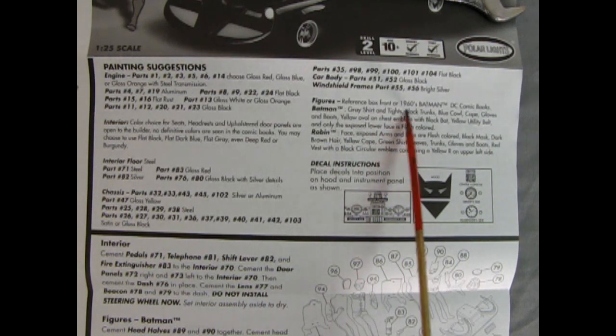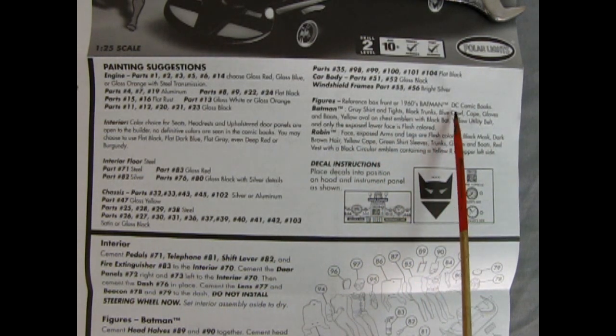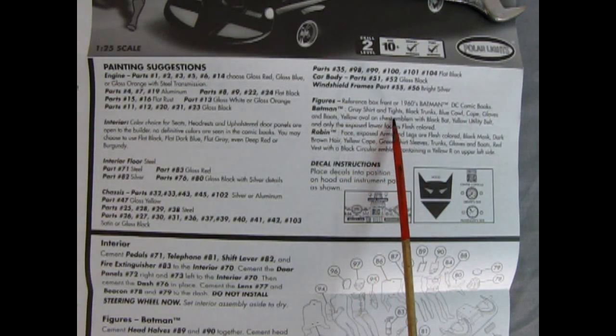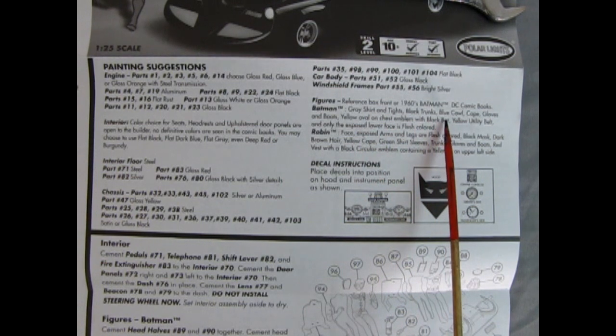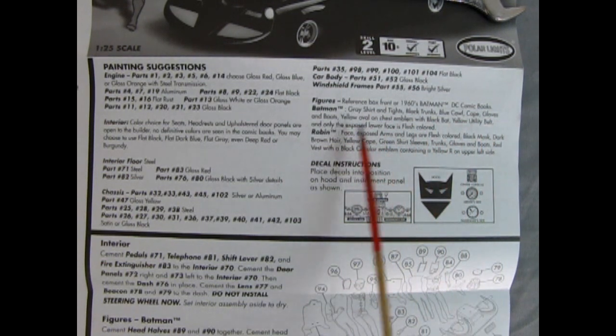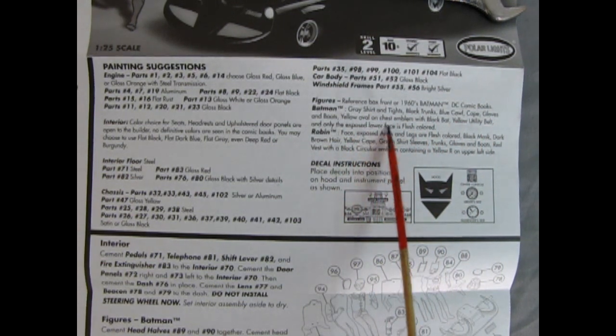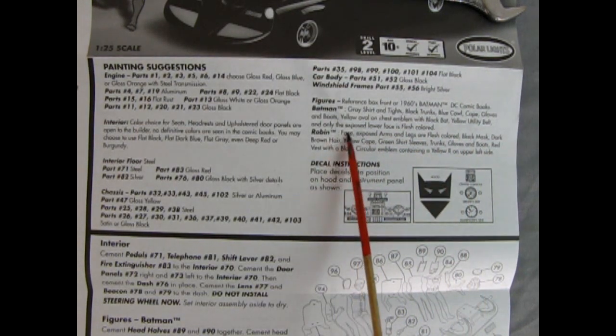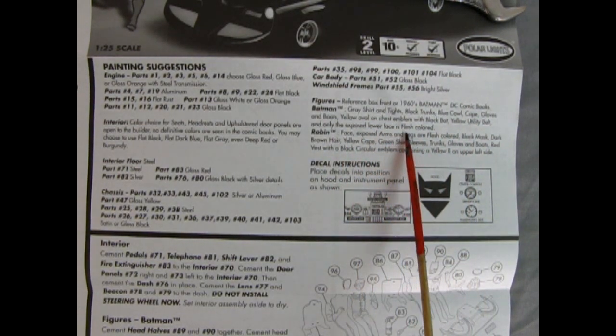Now it says, figures, reference box front or 1960s Batman comic DC comic books. Batman, gray shirt and tights. Black trunks, blue cowl, cape, gloves, and boots. Yellow oval on chest emblem with black bat. Yellow utility belt. And only the exposed lower face is flesh colored.